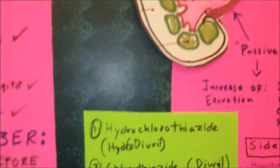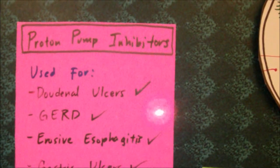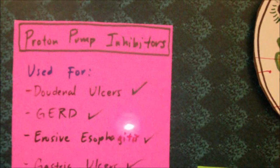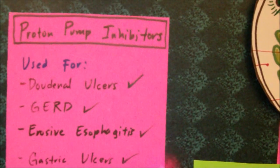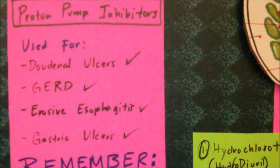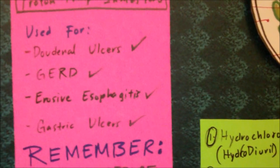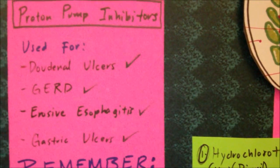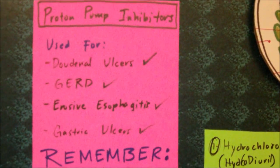The side effects of PPIs can include dizziness and headaches. In the gastrointestinal system, it can cause diarrhea, abdominal pain, nausea and vomiting, and also dry mouth. It can also cause the patient to have hoarseness, and sometimes it can cause epistaxis, or bleeding in the nose.